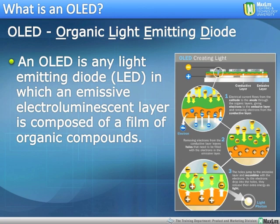Before we get started, let's define what it is we're talking about. We are talking about an LED that is structured with organic materials. An OLED is any light-emitting diode where the emissive electroluminescent layer is composed of a film made of organic compounds. It works very similar to regular LEDs or white light high-power LEDs as far as the structure is concerned. We have an electrical current from the cathode that flows through to the anode like any other LED, but going through organic layers gives electrons to the emissive layer and removes electrons from the conductive layer.